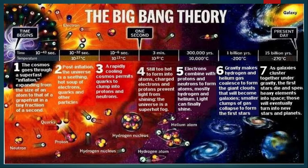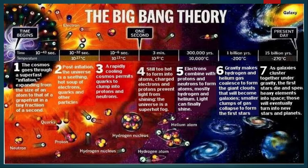From 15 billion years later up to the present, as galaxies clustered together under gravity, the first stars died and spilled heavy elements into space. This is when stellar explosion occurred — when stars die, supernova happens, forming heavy elements brought out into space. That is how the universe evolved from the beginning to the present day, according to the Big Bang Theory.